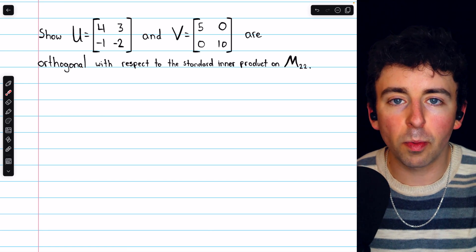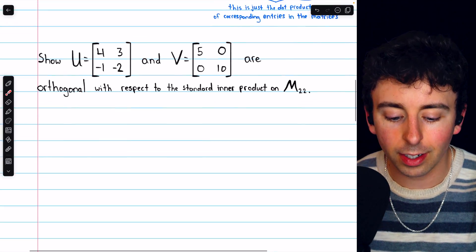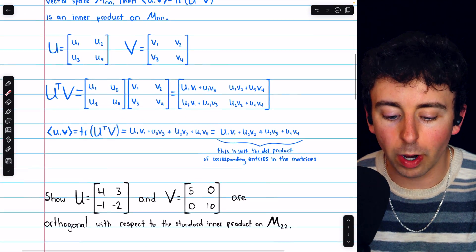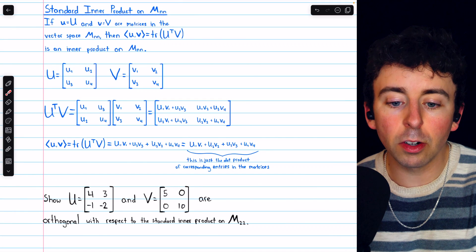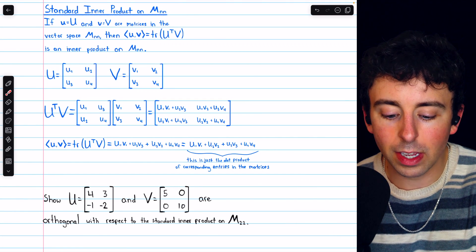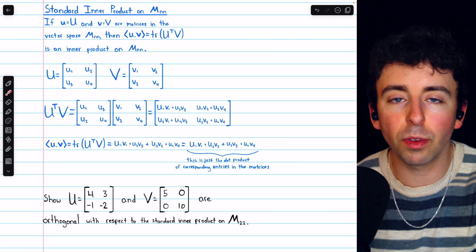I'll leave a link in the description to the video where I introduce this standard inner product, but here it is written out just for a quick recap. The standard inner product of two matrices U and V is the trace of U transpose times V.